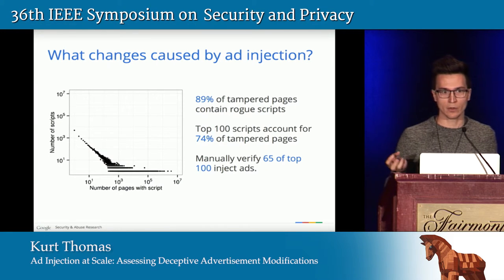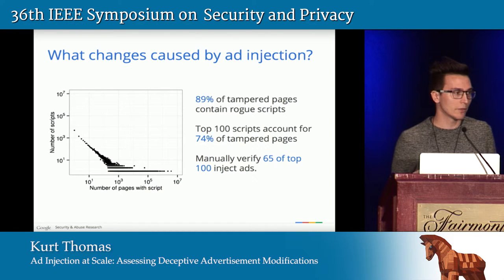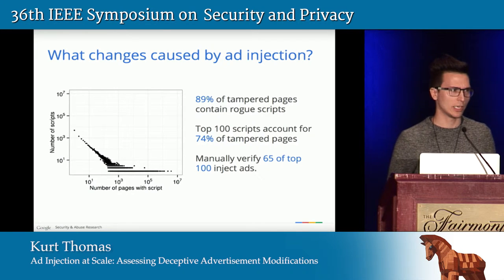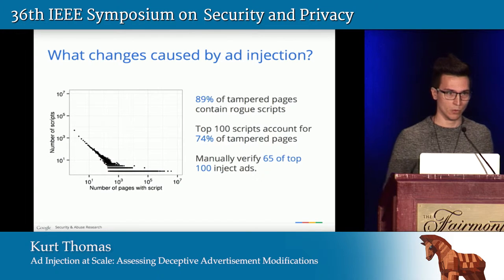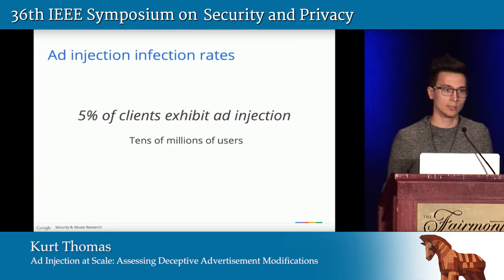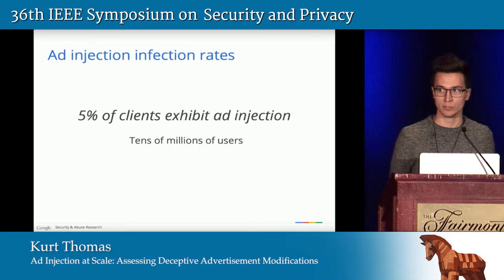Looking at what these foreign scripts injected into Google's content actually do, we manually investigated and reverse engineered all of them. We found that 65 of the top 100 scripts appearing across the data are related to ad injection; the others were things like jQuery or security toolbars. Based on this distribution, 5% of all clients visiting Google have some sort of ad injector installed — translating to roughly tens of millions of users on the web.